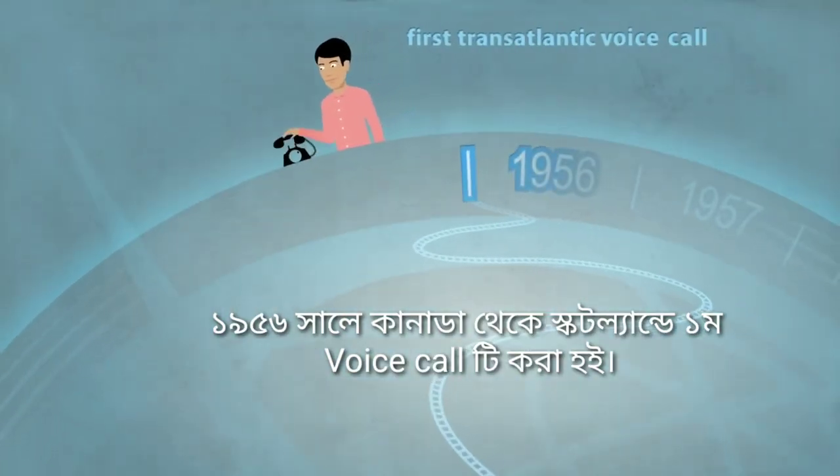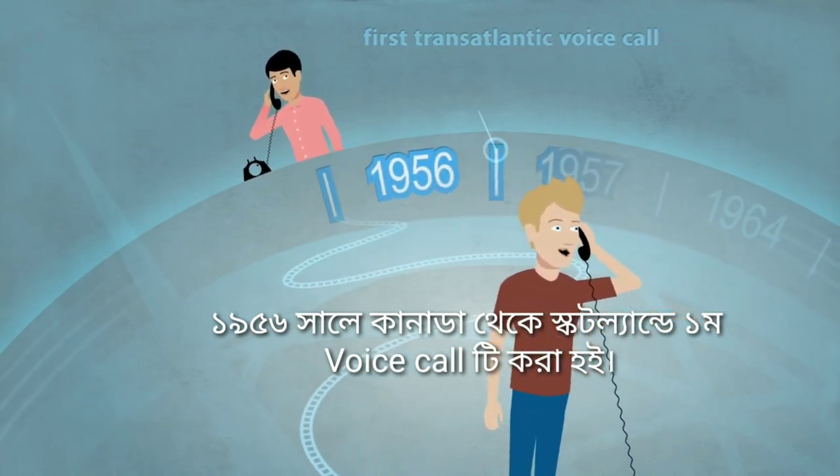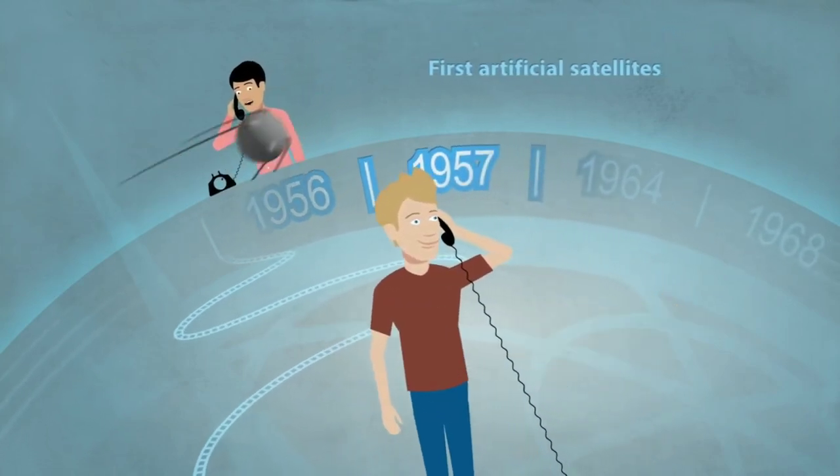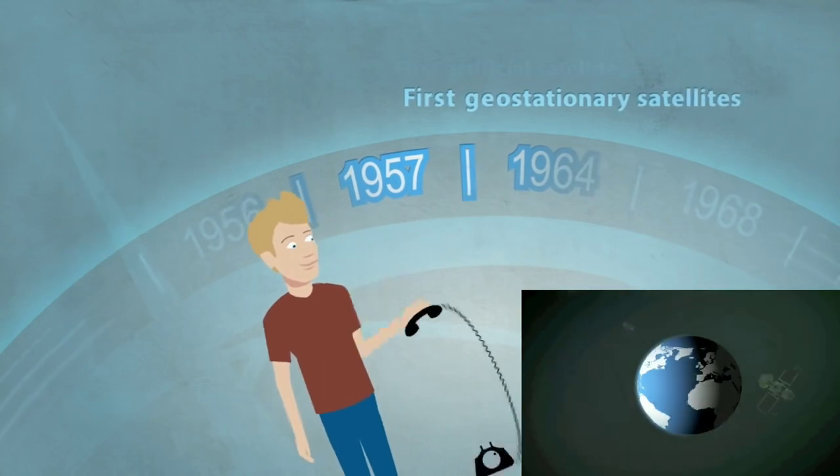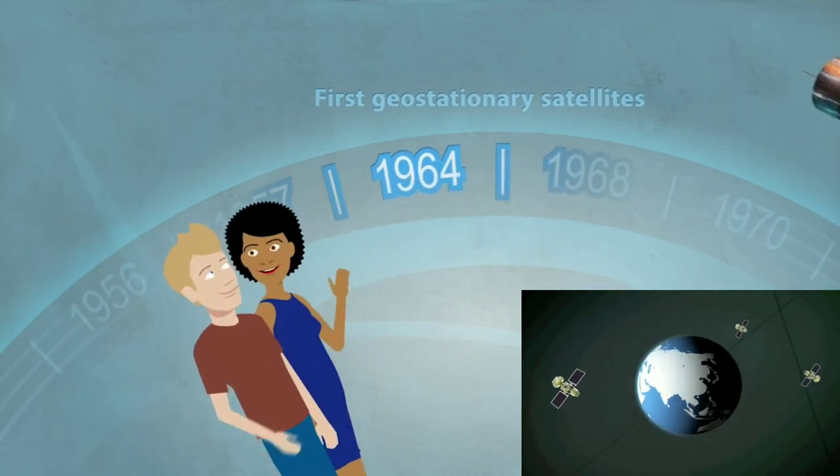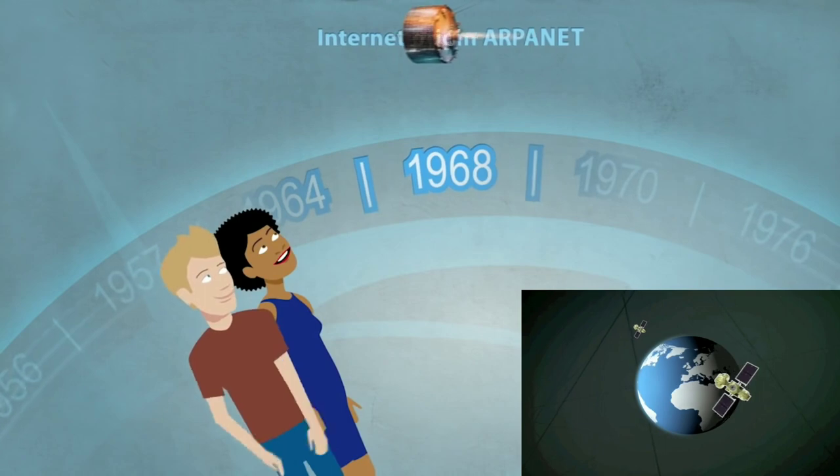In 1956, the first voice call crossed the Atlantic from Canada to Scotland. In 1964, the first communication satellite was installed in a geostationary orbit.